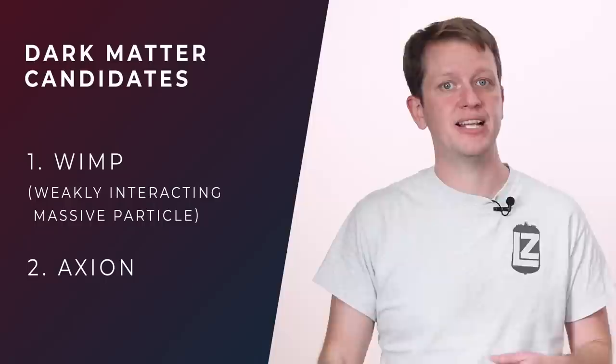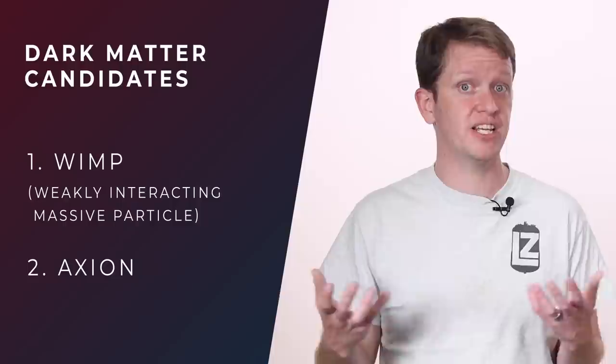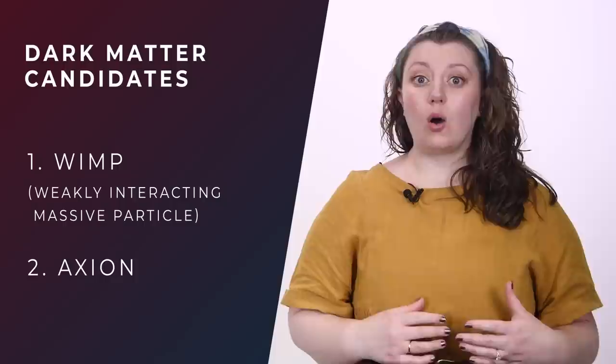That's right, there are lots of ideas for what might be the dark matter. Two of the most intriguing are the WIMP and the Axion. WIMP stands for Weakly Interacting Massive Particle, so something big that interacts through a weak force and gravity. Again, this is going to sound sort of like a neutrino. But to cause the gravitational clumping that we see, we need a WIMP that is way more massive than our standard model neutrino, thousands of times heavier.